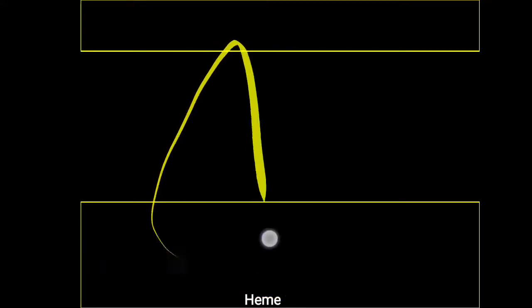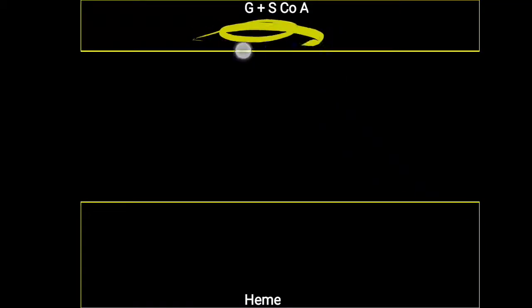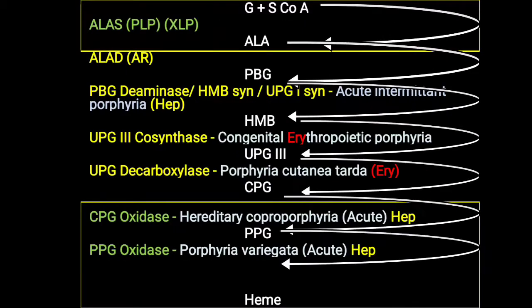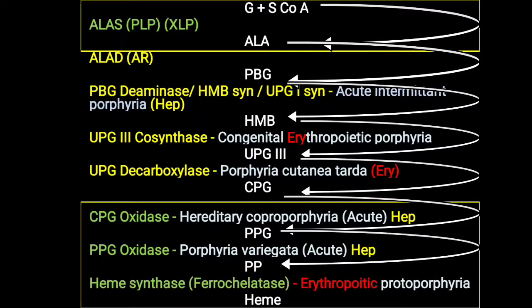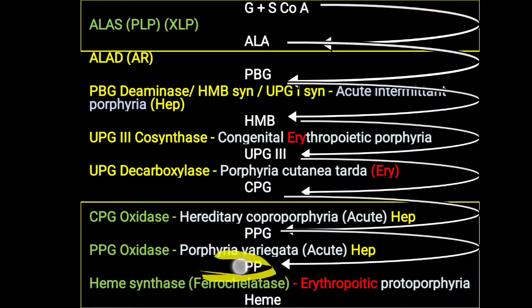For heme synthesis, eight different enzymes are needed. Initially, glycine and succinyl-CoA are needed, starting from the mitochondria. From glycine and succinyl-CoA, with the help of different enzymes, protoporphyrinogen is formed. From protoporphyrinogen, with the help of PPG oxidase, protoporphyrin is formed. One more enzyme is then needed — ferrochelatase, also called heme synthase — along with an iron molecule. Iron, with the help of ferrochelatase, is added to protoporphyrin, and finally heme is synthesized.